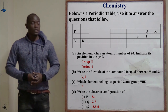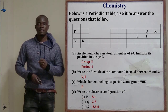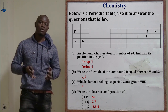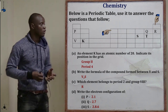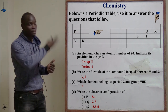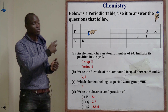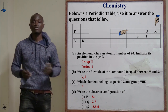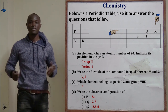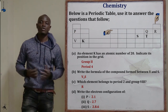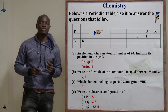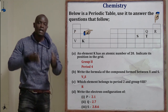Question letter C asks: which element belongs to period 2 and group 8? Counting the periods and groups on the periodic table, we identify this element as R. So element R is the element in period 2 and group 8.